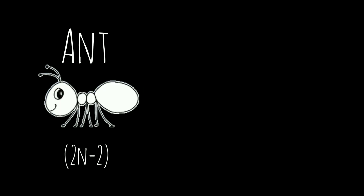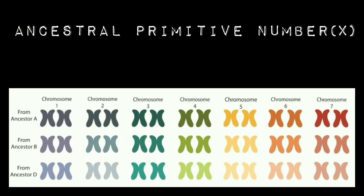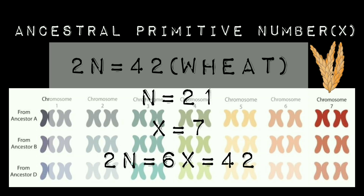Chromosome number varies from 2n=2 in the ant to 2n=4 in Haplopappus gracilis. In polyploid individuals, it becomes necessary to establish an ancestral primitive number, which is represented by x and is called the base number. For instance, in common wheat 2n=42, where n=21 and x=7, showing that common wheat is a hexaploid, because 2n equals 6x.